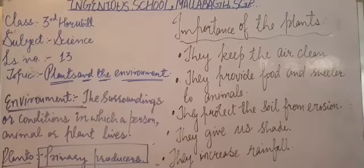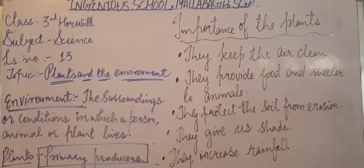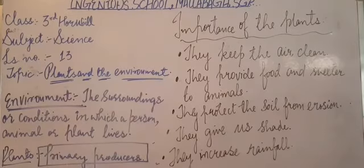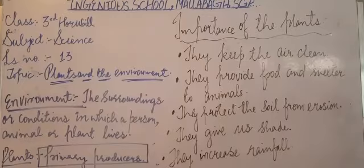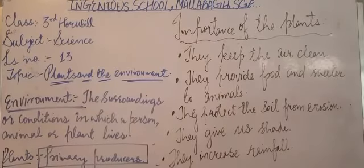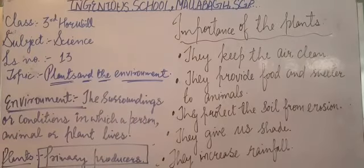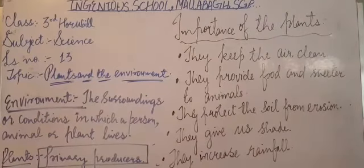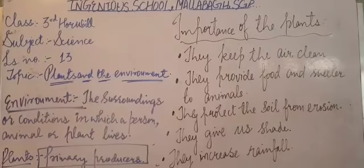Plants also increase the rainfall. Plants take in water from the soil through their roots. During hot days, the extra water evaporates from the leaves of the plants. This water then rises up into the air to form clouds and later falls as rain. So, in this way, plants also increase rainfall.